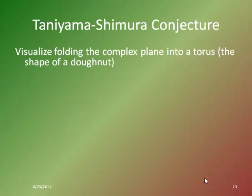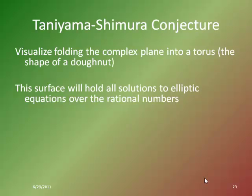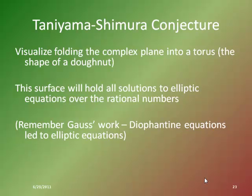Very specifically, what their conjecture says is that if we take the complex plane — really just the upper half of the complex plane — and convert that into a torus, like a donut, that particular surface would have all the solutions to elliptic equations over the rational numbers and complex numbers. This ties Gauss's work on Diophantine equations and elliptic equations to his work with complex numbers, and applies it to non-Euclidean geometries in the shape of a torus.